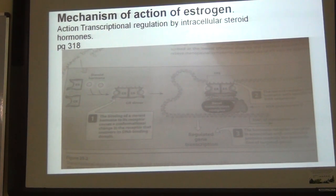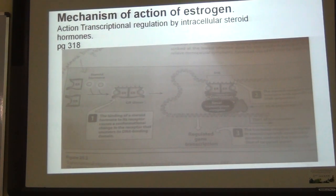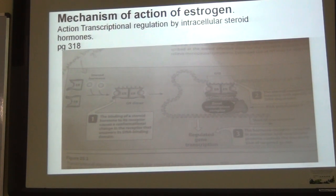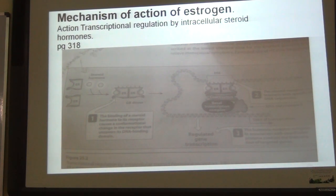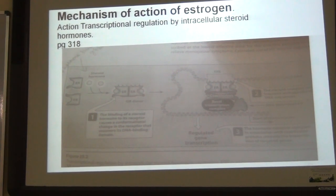There are other pathways of these hormones. For example, in the membrane of hypothalamic cells, estrogen initiates second messenger cascades. Another pathway is estrogen-mediated dilation of coronary arteries, which occurs by increased formation and release of nitric oxide and prostacyclin in endothelial cells.